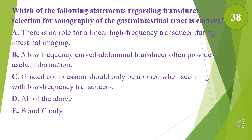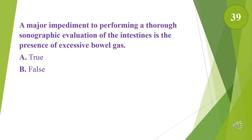Which of the following statements regarding transducer selection for sonography of the gastrointestinal tract is correct? A. There is no role for a linear high frequency transducer during intestinal imaging. B. A low frequency curved abdominal transducer often provides useful information. C. Graded compression should only be applied when scanning with low frequency transducers. D. All of the above. E. B and C only. The answer is B. A major impediment to performing a thorough sonographic evaluation of the intestines is the presence of excessive bowel gas — true. This is why the patient should fast when we scan the abdomen.